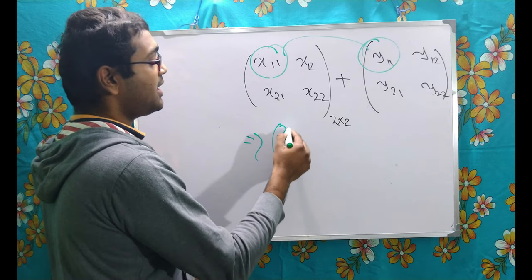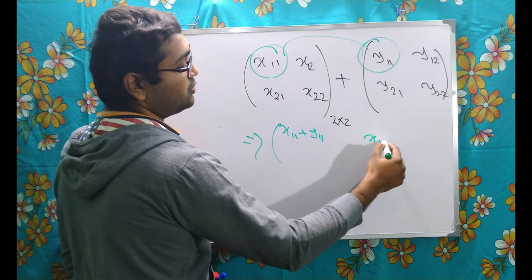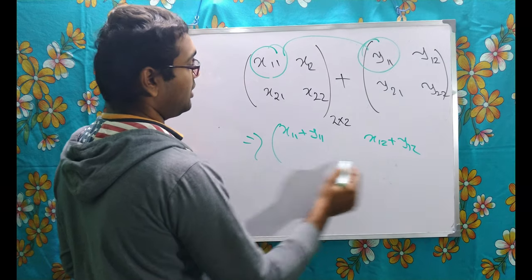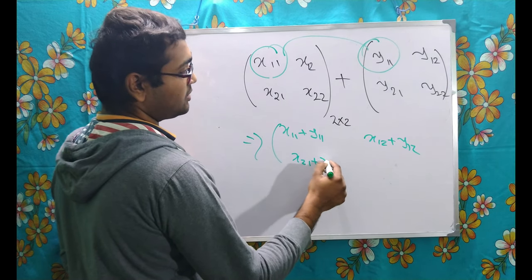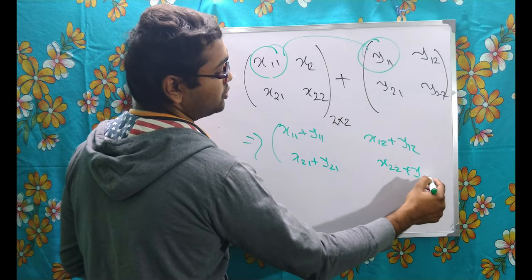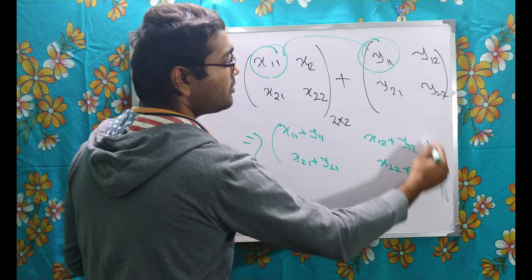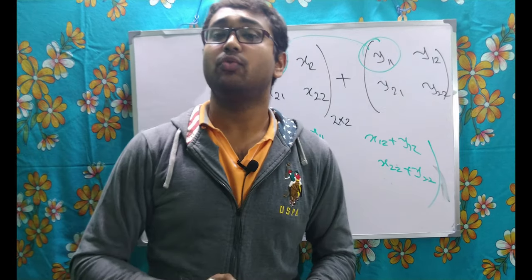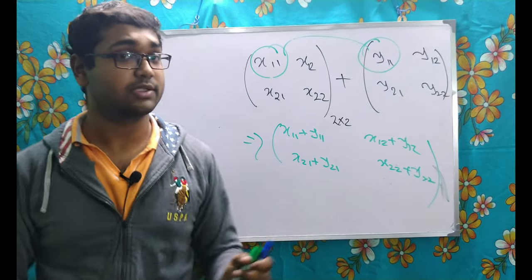So, the sum ultimately will be x 1 1 plus y 1 1, x 1 2 plus y 1 2, then x 2 1 plus y 2 1 and x 2 2 plus y 2 2. Now, I have done this for only 2 cross 2 order matrix, you can do it for any order matrix.